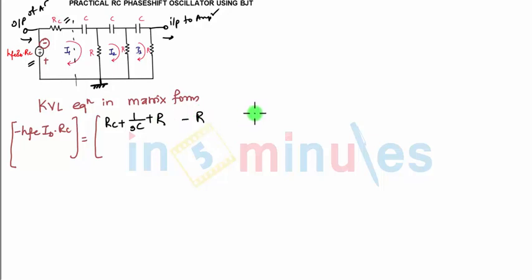Then common to second you have only R common to third, you don't have anything. Then again minus R, total resistance is 2R plus 1/(sC) in the second loop, then R, then zero.